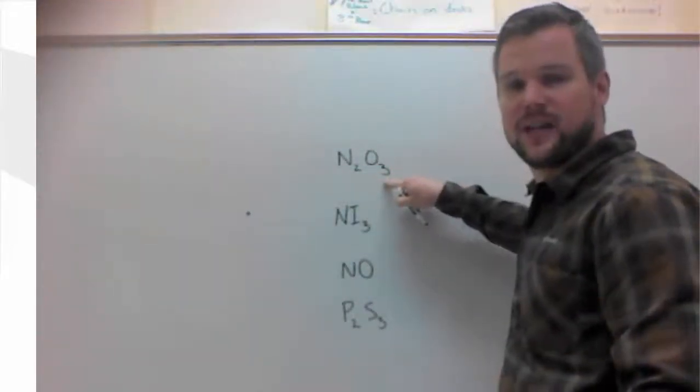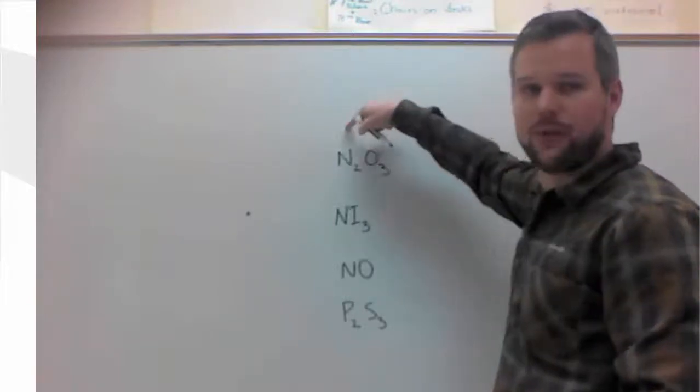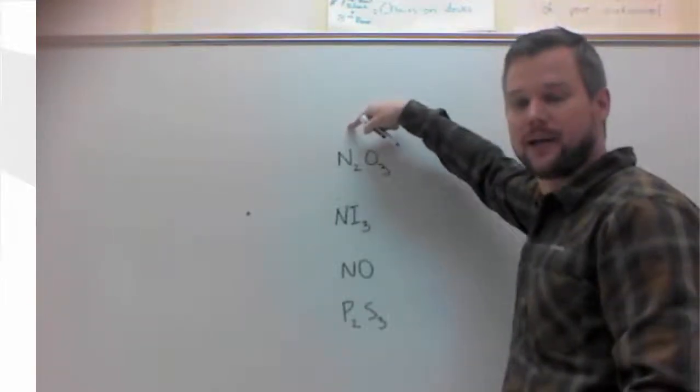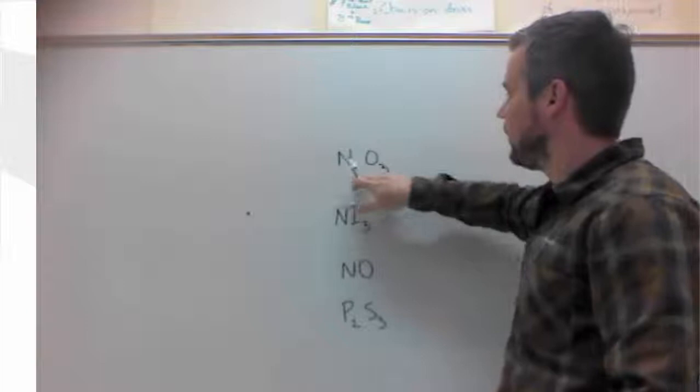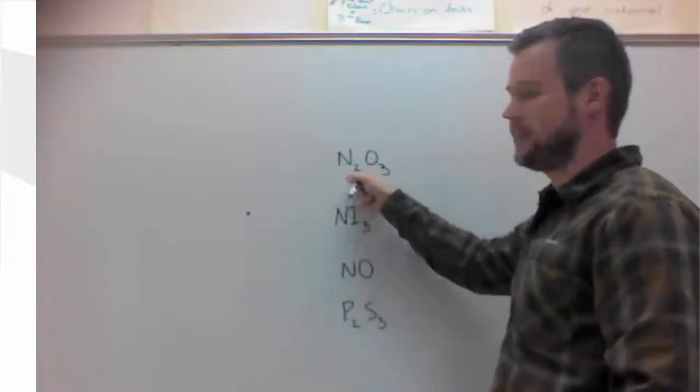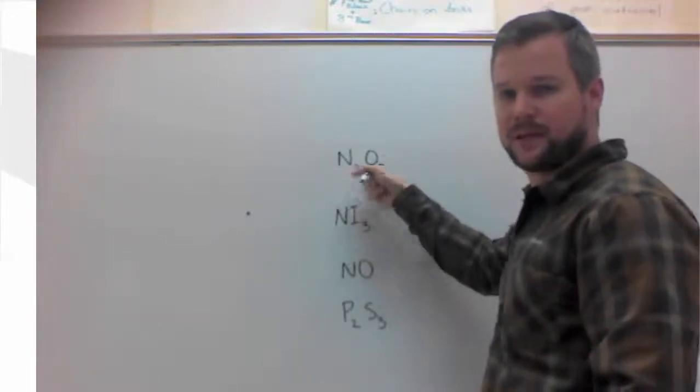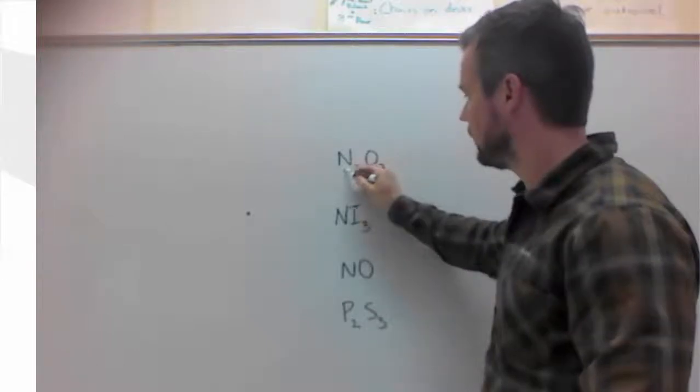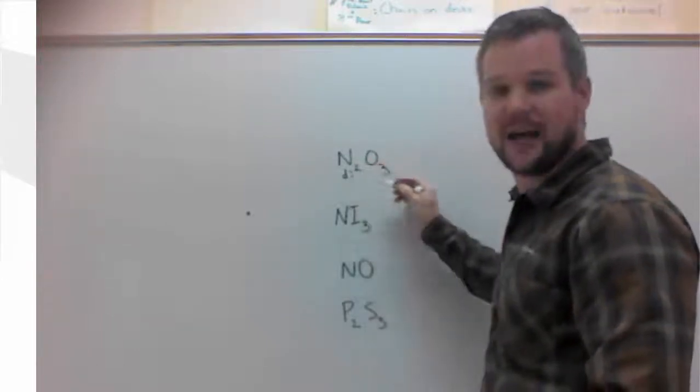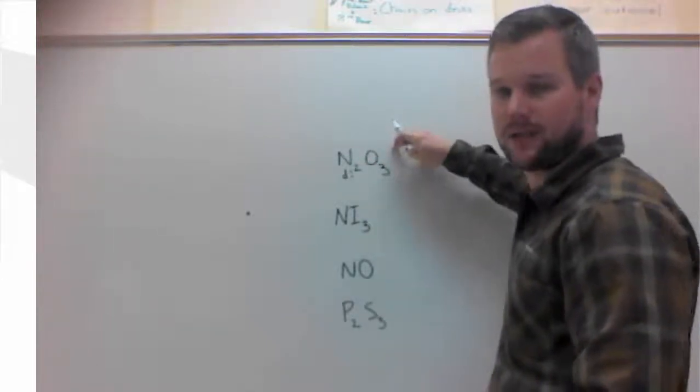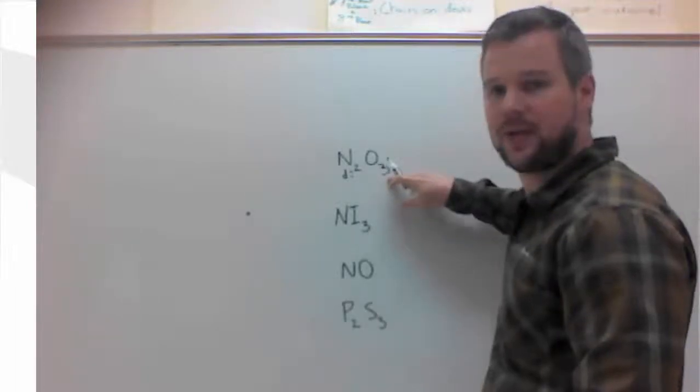The first formula, I see that it's a nonmetal to a nonmetal. Both of these atoms live on the right-hand side of the periodic table. So I'm going to find my atom. It has a subscript of two, so it's going to need a prefix. That subscript for two is di. And then the second atom always gets a prefix. For three, it's tri.